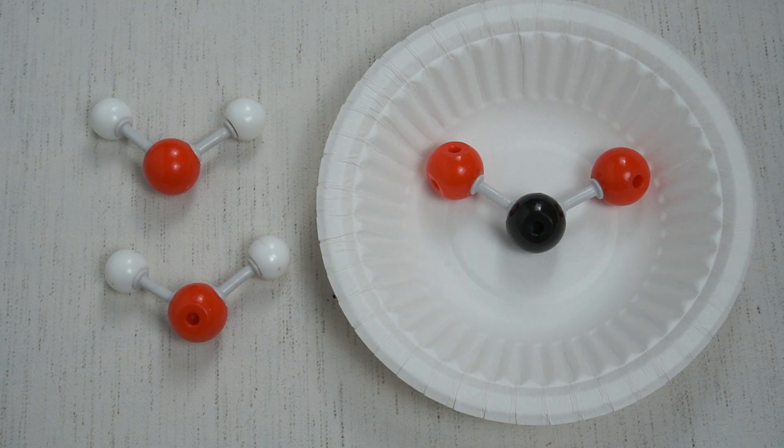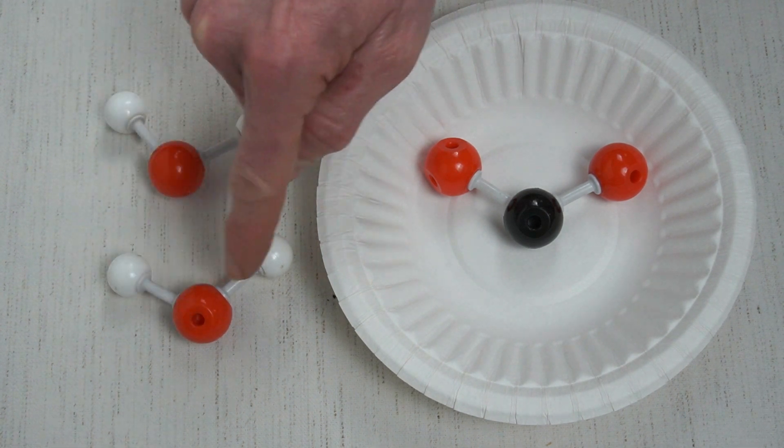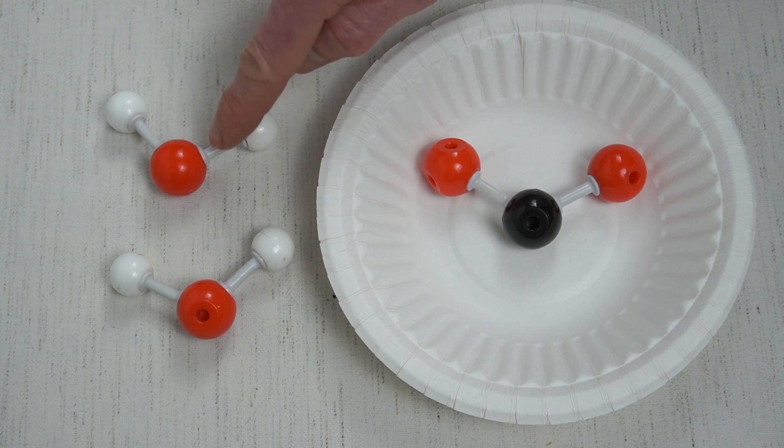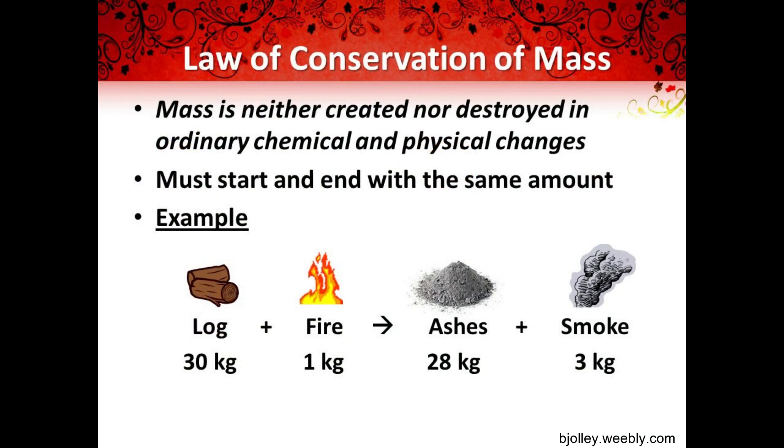And lastly, let's count our atoms post fiery combustion. We have one, two, three, four, five, six, seven, eight, nine atoms still, and one, two, three, four, five, six electrons, the same amount as we started with. This is called the law of conservation of mass. Nature always reuses its atoms.